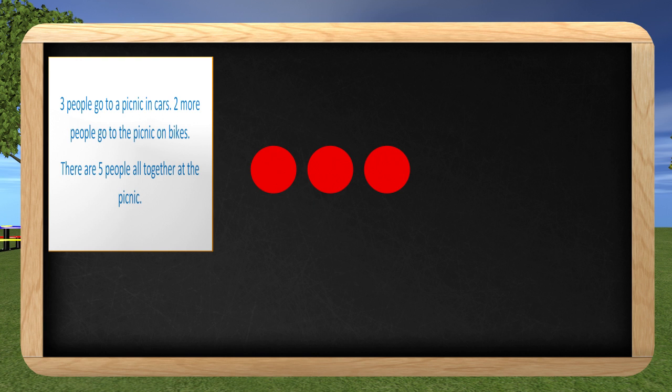Then it tells us that two more people went to the picnic on bikes. I am going to put a break apart line right here to separate the people who went in cars from the people who went in bikes. There were two people who went on bikes, so we have two circles for those people. Now we have a picture that tells us a little bit about the story. We have the three circles on the left that show three people went in cars, and on the right we have the two circles showing the people who went on bikes.